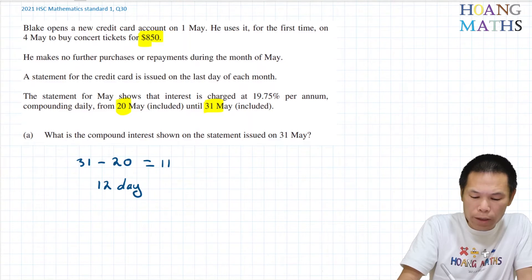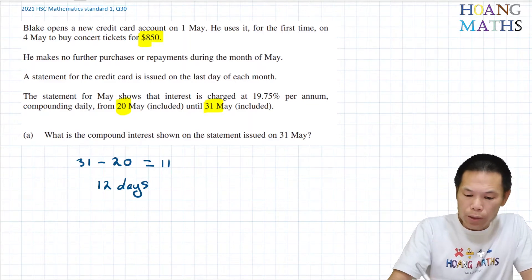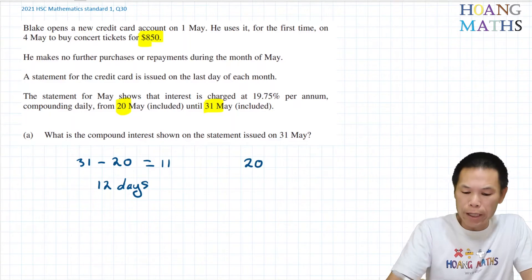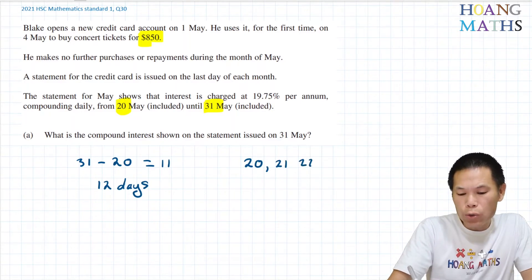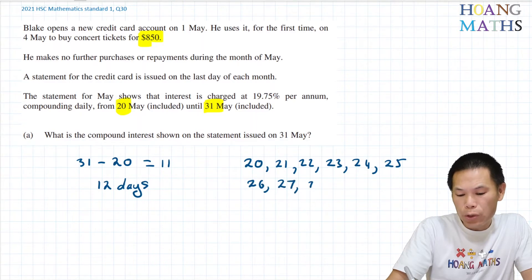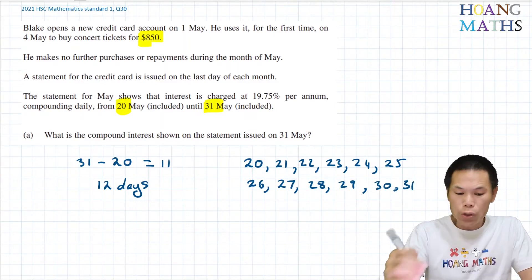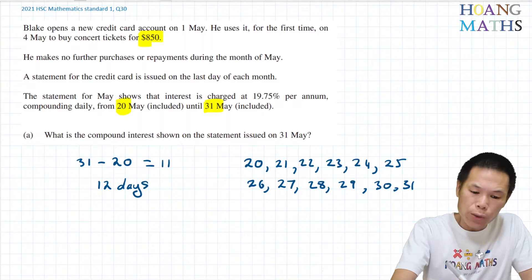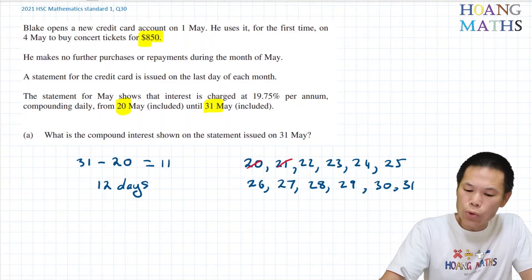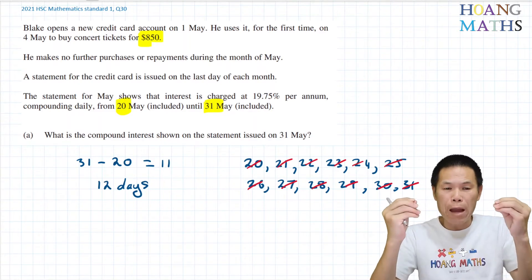We need to add one day for the 20th, so 12 days. We can also just quickly write out the days: 20th, 21st, 22nd, 23rd, 24th, 25th, 26th, 27th, 28th, 29th, 30th, and 31st — these are the dates on which interest is owed. Counting them up: 1, 2, 3, 4, 5, 6, 7, 8, 9, 10, 11, 12. So 12 days altogether. We just use the compound interest formula.